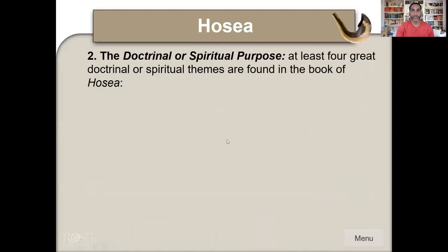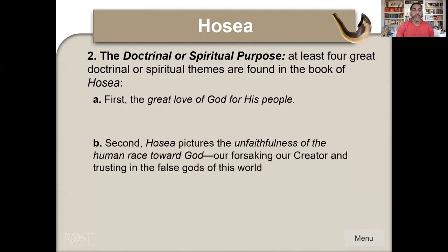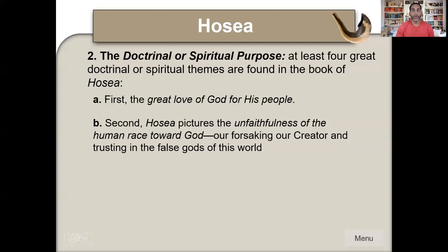The doctrinal purpose — at least four great doctrines are found in Hosea. The first is the great love of God for his people. Hosea keeps going after his wife Gomer, telling her to come back home over and over again, portraying how God goes after his people. He keeps going after people with his love and mercy. Second, Hosea pictures the unfaithfulness of the human race toward God — our forsaking our creator and trusting in the false gods of this world.